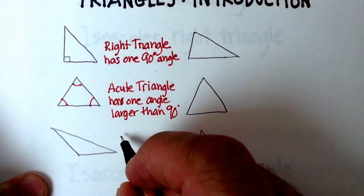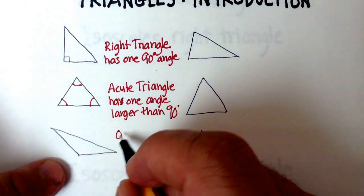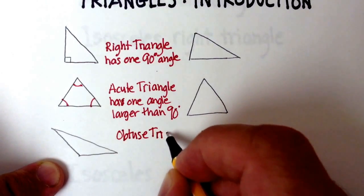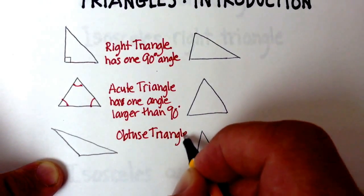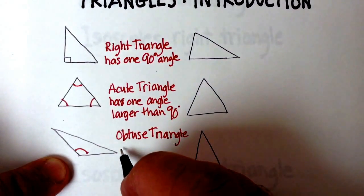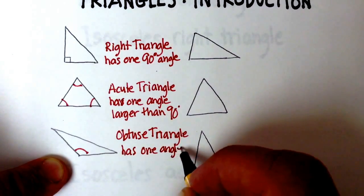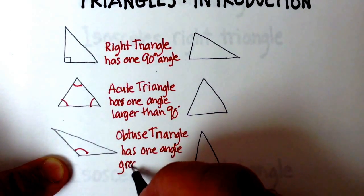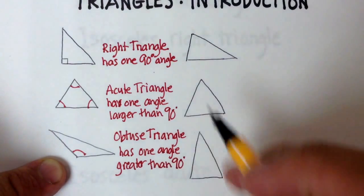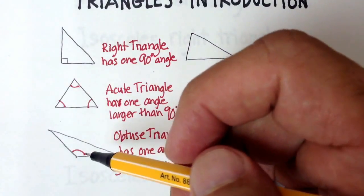This triangle is called an obtuse triangle. It's obtuse because it has one angle that's greater than 90 degrees. And these three are some of the most common types of triangles that we'll be dealing with.